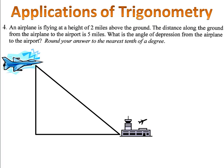We draw a triangle and we label what we have. The airplane is two miles above the ground. The distance from the airport to the airplane along the ground is five miles. We want to know the angle of depression, the angle that the pilot's looking down to see the airport.